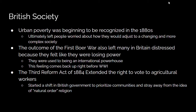Some important legislation was the Third Reform Act of 1884, which extended the right to vote to agricultural workers. Ultimately, this legislation led to a shift in British government to prioritize communities and stray away from the idea of natural order religion — which was what gave the monarchies their power. They shifted their priorities to communities: things like free public education, better access to medical care, and things like that. So it was a big time for shifts in British society.